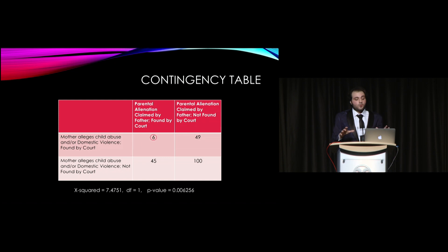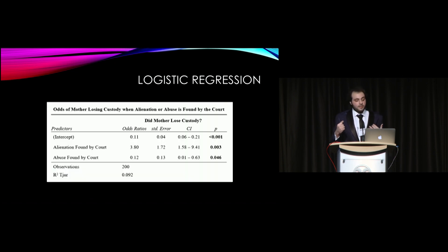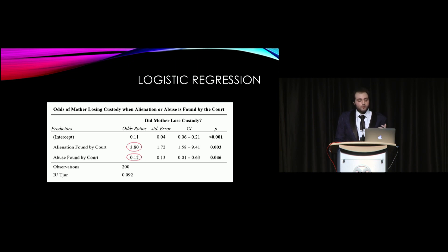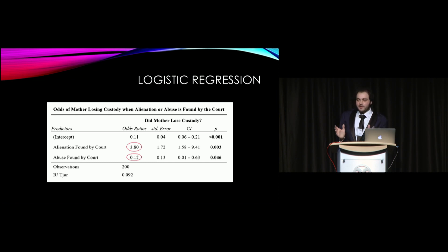For the second claim — do these cases lead to the mother losing custody — we ran a logistic regression. Predictors were whether alienation was found and whether abuse was found; the outcome variable was whether the mother lost custody. When alienation was found, the odds of the mother losing custody were 3.8. When abuse was found, the odds were nearly zero — meaning any time abuse was found by the court, it was extremely rare for the mother to lose custody. Our initial plan was an interaction term for both findings, but since only six cases had both, the statistics wouldn't be significant enough.